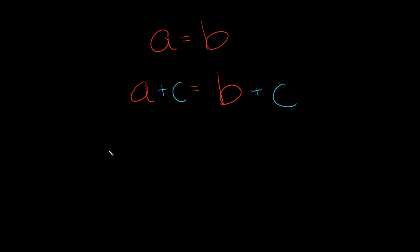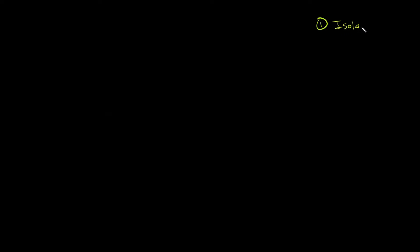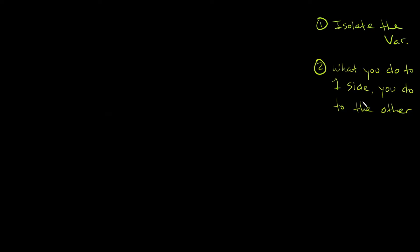The addition property of equality just says: if you have two things that are equal to each other and then you add the same thing to both of them, then this whole thing is still going to be equal to this whole thing. So just like with the subtraction property, there are two things to keep in mind. First, isolate the variable. And secondly, what you do to one side, you do to the other side.